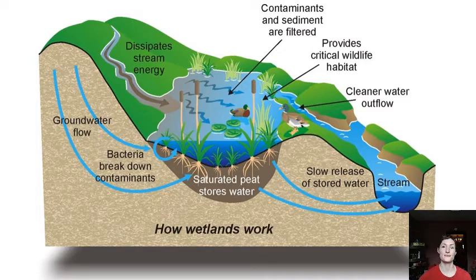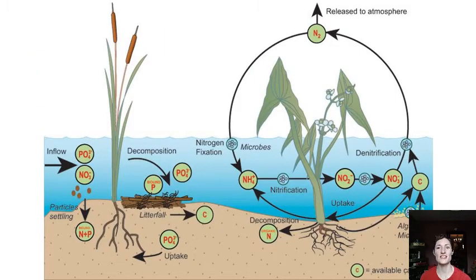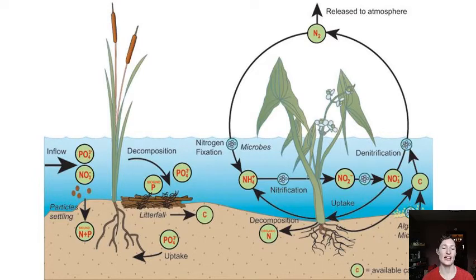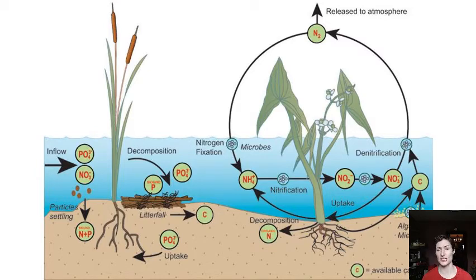The plants in the wetland also take up nutrients like nitrogen and phosphorus that, if they made it out to the ocean or another body of water, would cause eutrophication. Microbes play a huge role, particularly in changing forms of nitrogen — either into a form that plants can uptake, or into atmospheric nitrogen. They do a great job of taking things that would cause eutrophication in the ocean and turning them into something the wetland plants will use or something that won't make it out to the ocean.